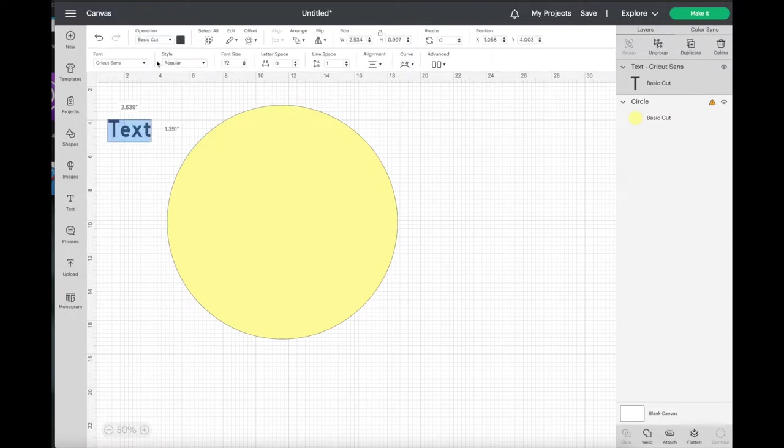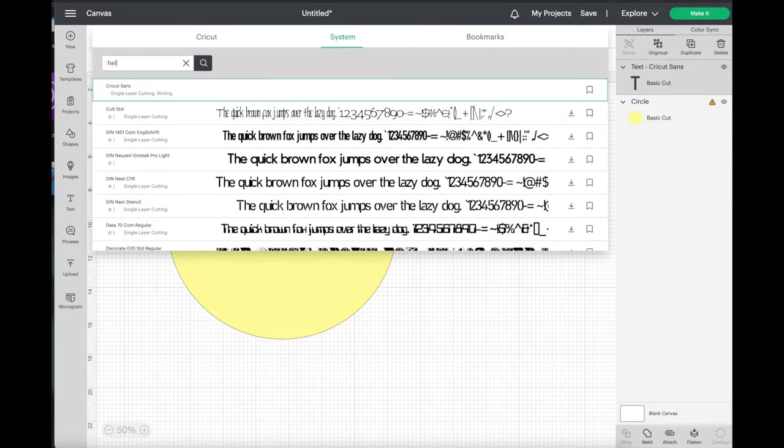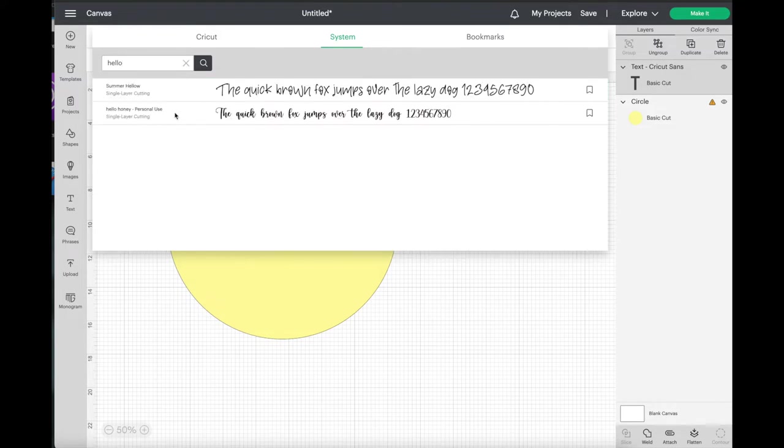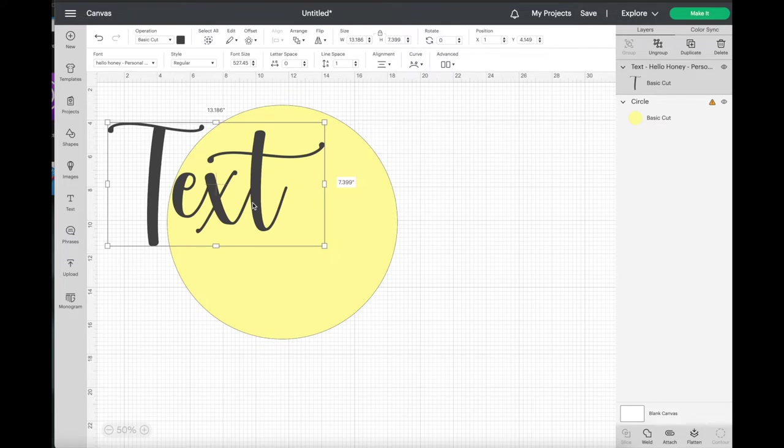I clicked add text and then I searched for the font that I wanted. For this project I used a font called Hello Honey and then I typed in an H and then enlarged it to fit the circle. Now this is going to give me approximately two inches on the top and the bottom of my image.